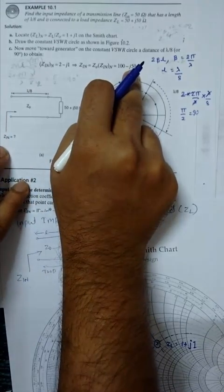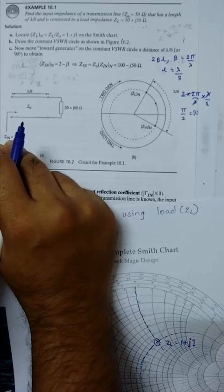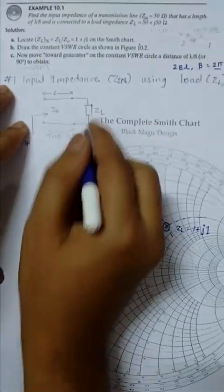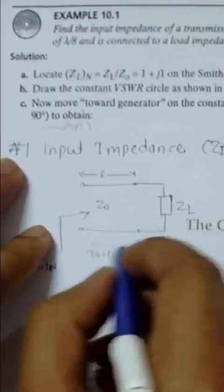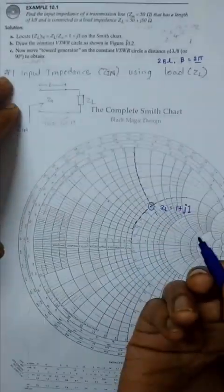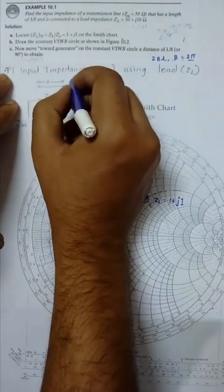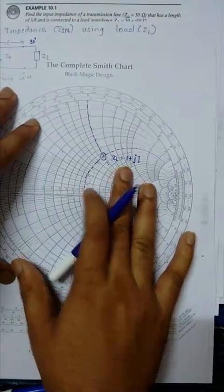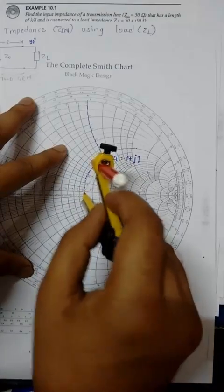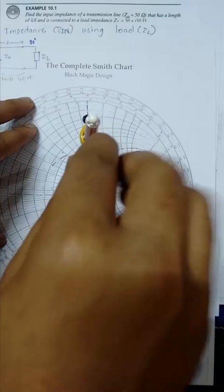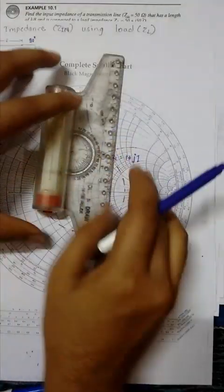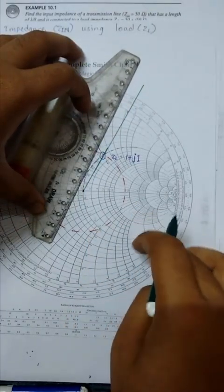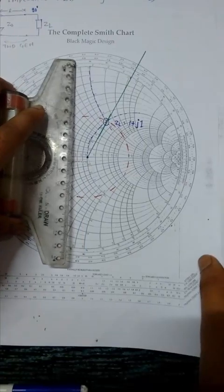What we have to do: first find Zin. We have 50 plus 50j ohm, then we have to move toward generator by L, which means you move by 90 degrees. How to perform this? We have to draw constant VSWR circle. Draw this line. Now you have to rotate by 90 degrees.